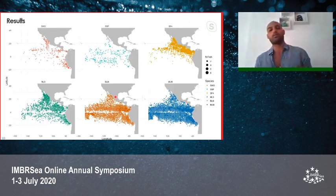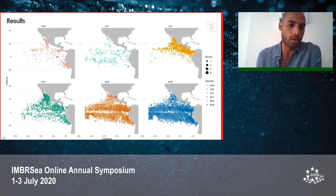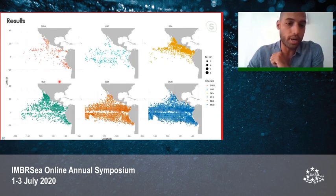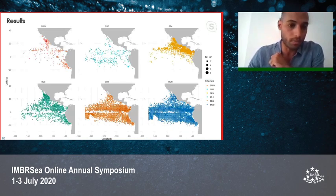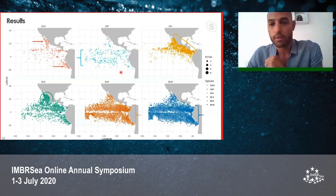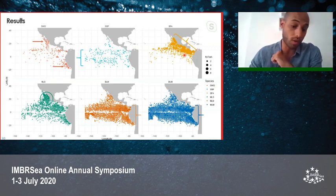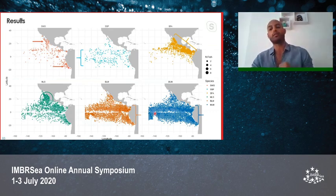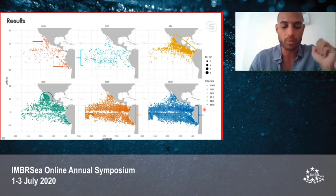Looking first at the fishery data by species: swordfish were caught mainly in the Baja California Peninsula area and the coast of Peru. Short-bill spearfish had the lowest number of catches but were spread across the study area. Sailfish occurred mainly in the northern part and coastal areas of Central America and Mexico. Striped marlin were well distributed but most abundant off Mexico, while black marlin and blue marlin had more data and were well spread across the study area.